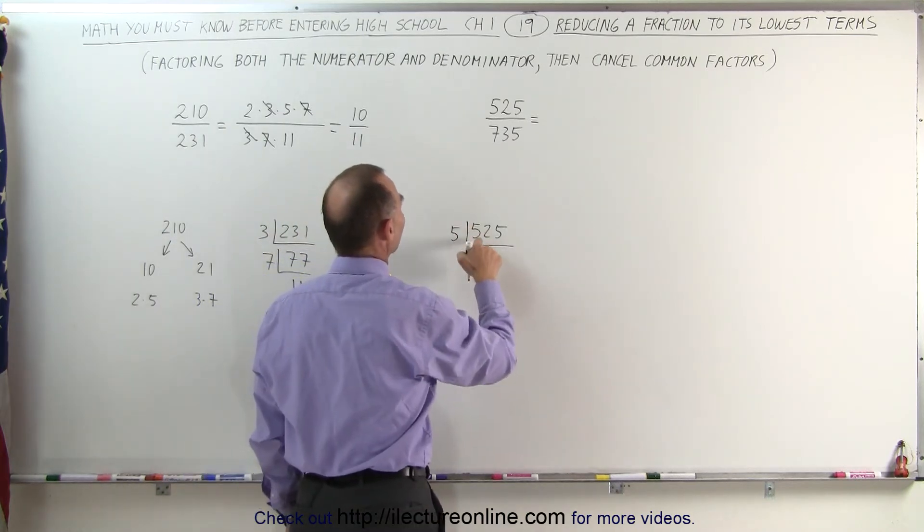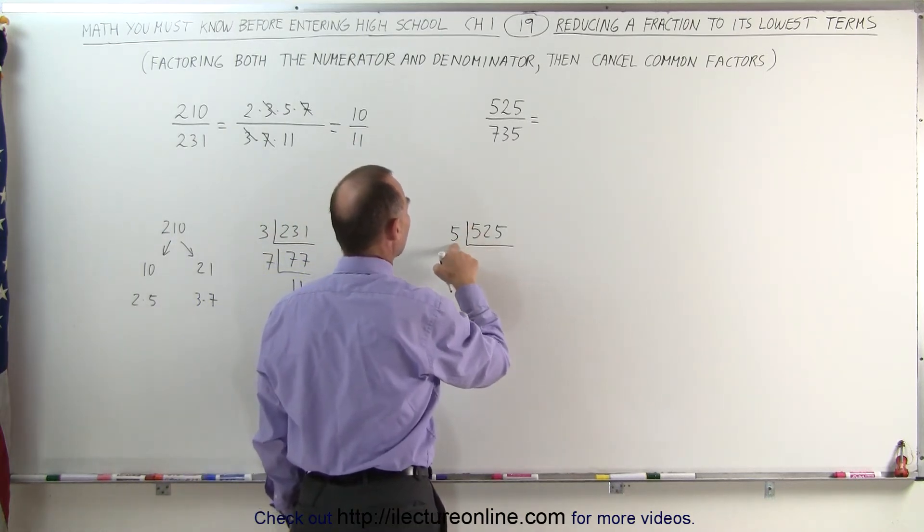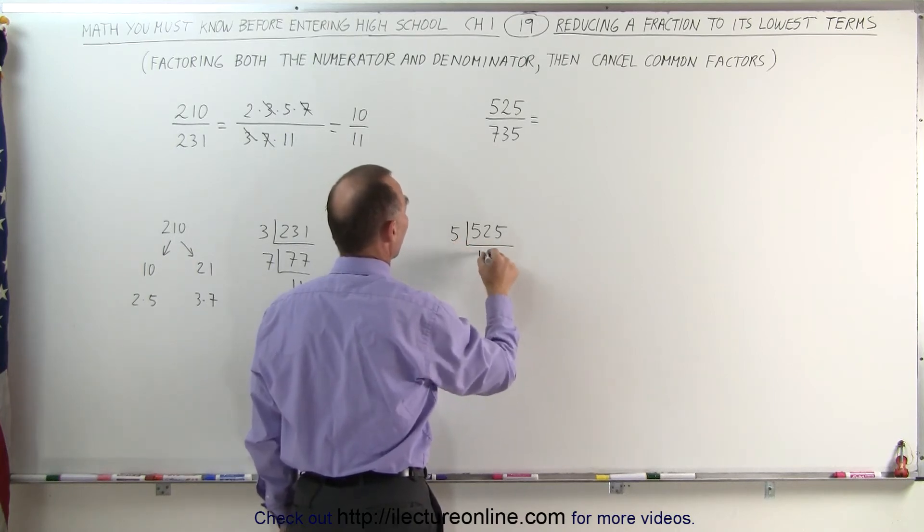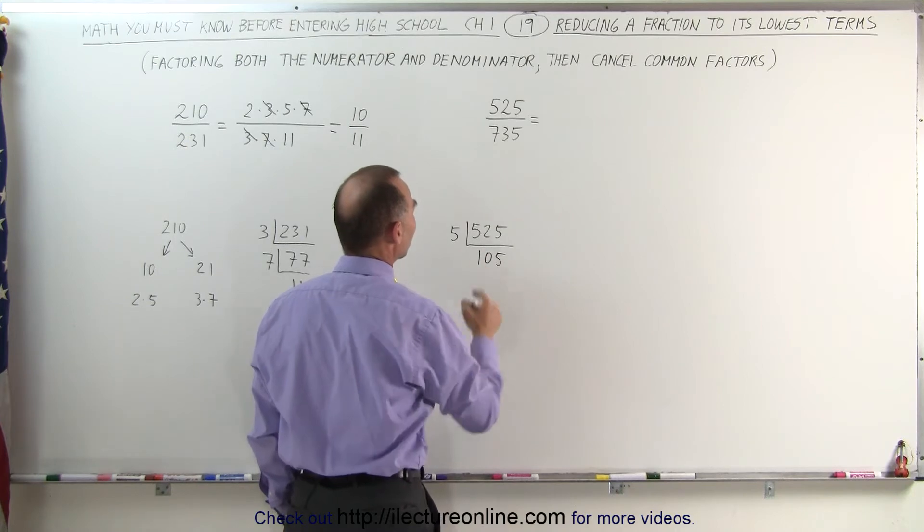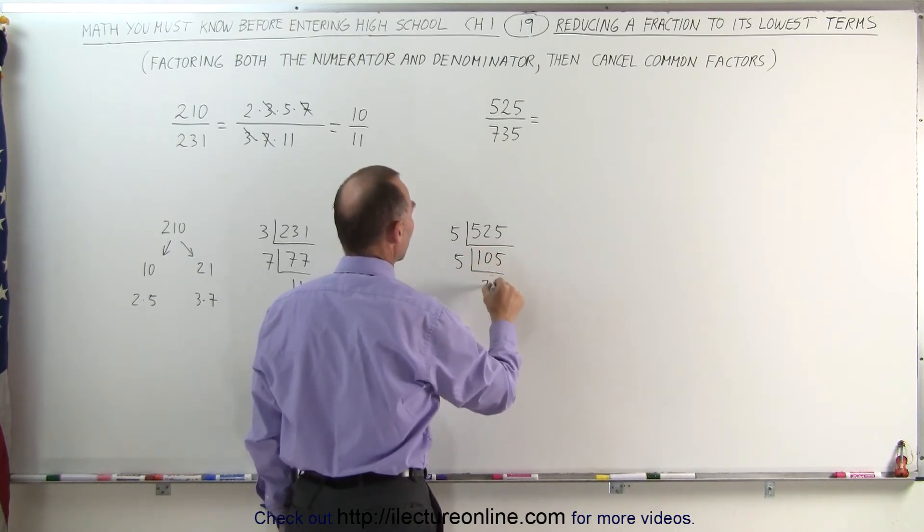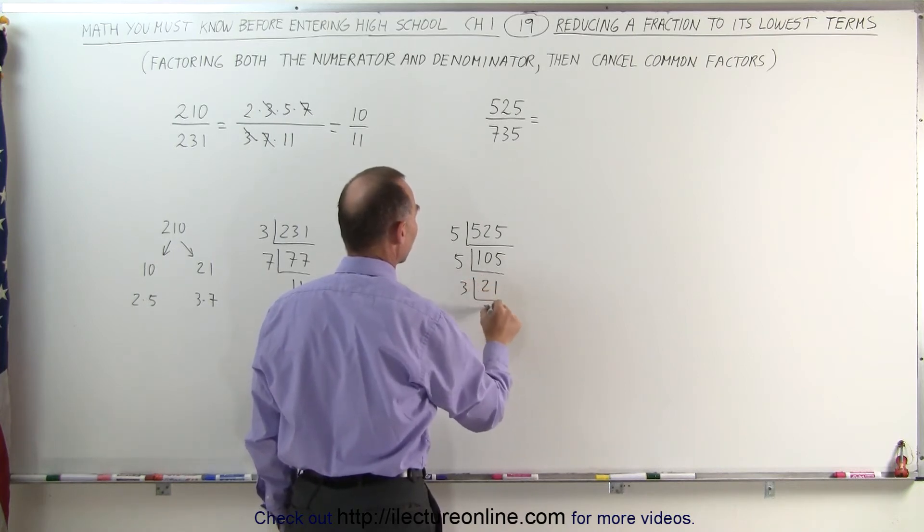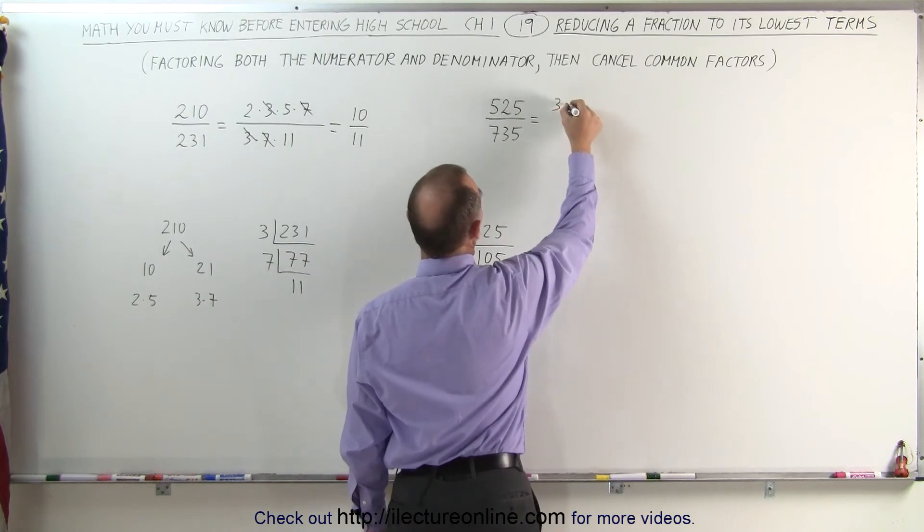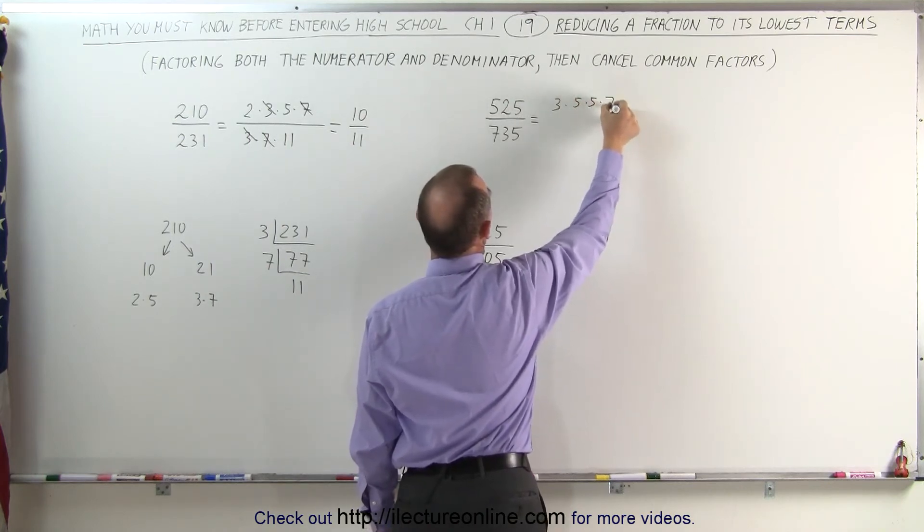If I divide this number by 5, 500 divided by 5 is 100, and 25 divided by 5 is 5, so this is 105. This can still be divided by 5. 5 goes into 105 21 times, and 21 can be divided by 3, which gives us 7, which means that 525 can be written as 3 times 5 times 5 times 7.